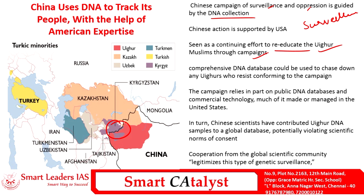The irony here is that in order to verify the veracity of any DNA sample, we need a benchmark or test sample — and a capitalist nation is supporting this communist government's action. The USA is supporting China in assessing the veracity of DNAs. This comprehensive DNA database being built by the Chinese government could be used to chase down any Uighurs who resist the campaign, and these DNA databases are managed in the United States.